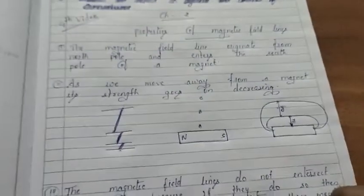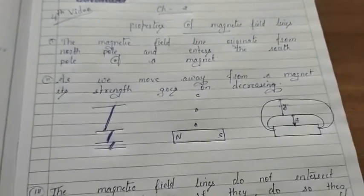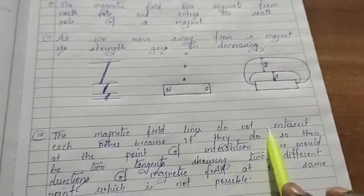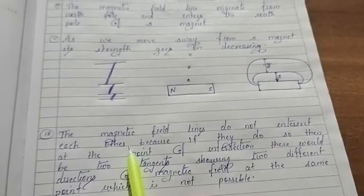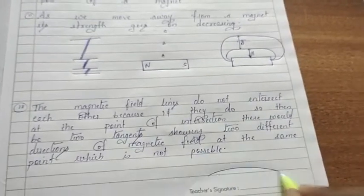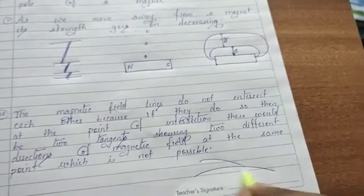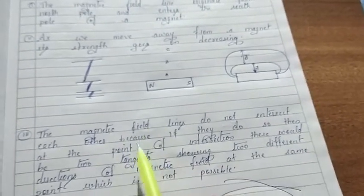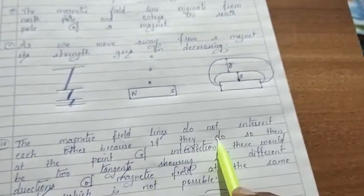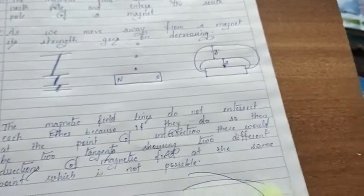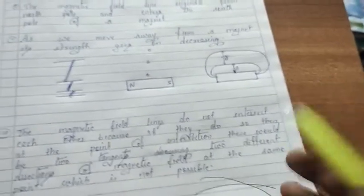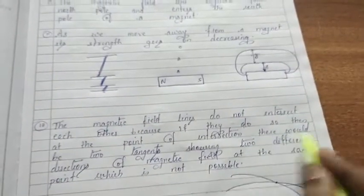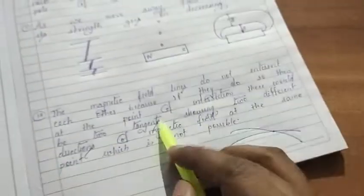The distance between two magnetic field lines will not intersect each other. This is the third property: magnetic field lines do not intersect each other. Consider one magnetic field line and another — these two lines do not intersect. Why do they not intersect? Because if they did intersect at a point of intersection, there would be two tangents at that point.